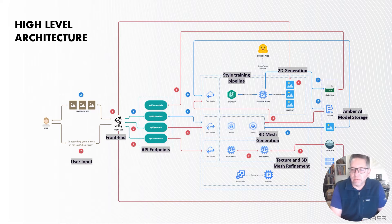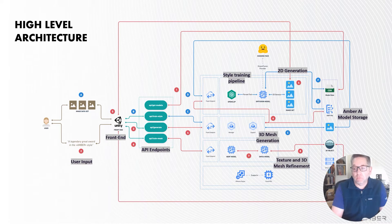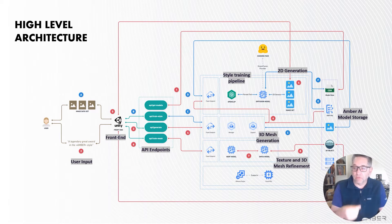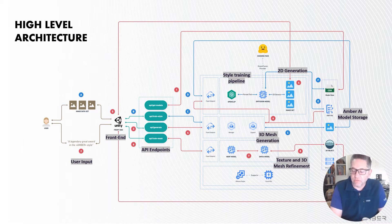That model looks at the training set of styles we have, and then we're able to generate 3D from that with a couple of techniques — one is a NeRF mesh generator with a DMT-ET model. Because of the modularity of the system, we're able to plug in brand new bleeding-edge tech as it's discovered and starts to become useful.